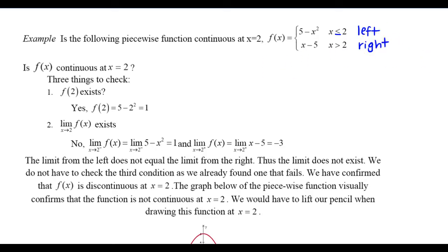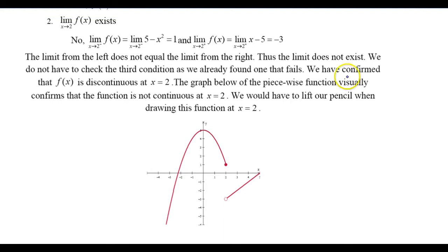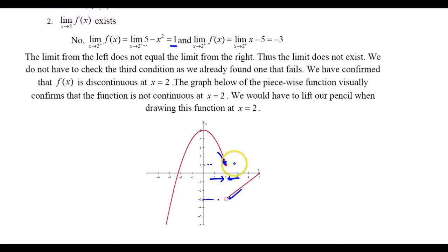To evaluate these limits, let's look at the graph. This parabola is 5 minus x squared and the line is x minus 5. As I approach 2 from the left, I'm getting closer and closer to 1, so the limit from the left equals 1. As I approach 2 from the right, my y values are getting closer to negative 3. Since 1 does not equal negative 3, the limit from the left doesn't equal the limit from the right, so the limit as x approaches 2 does not exist. Once one part fails, we can stop — the function is discontinuous at 2.